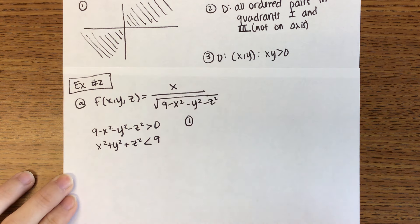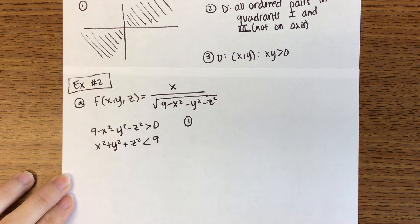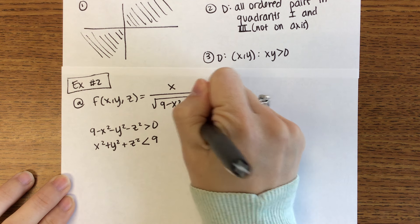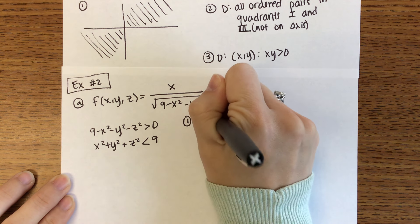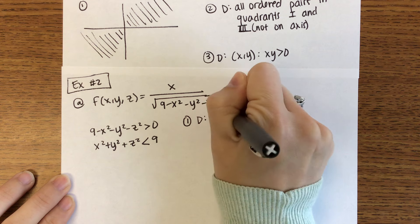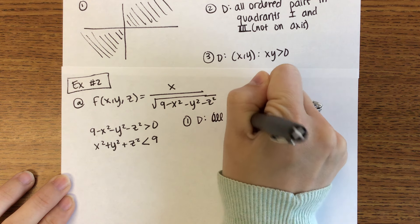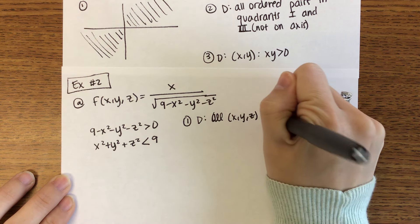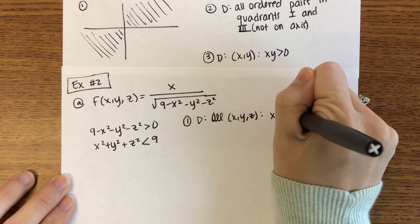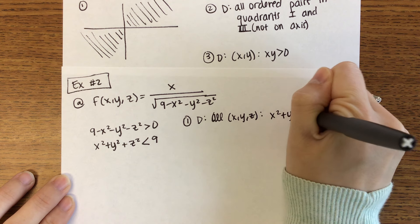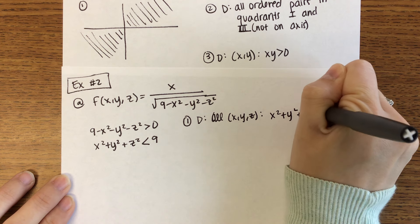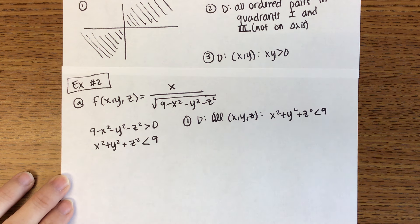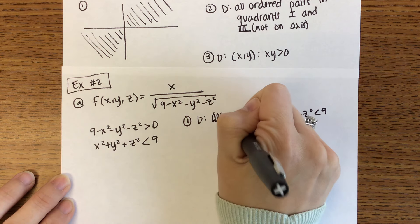We know that 9 minus x squared minus y squared minus z squared has to be greater than zero because we don't want to divide by zero. Moving the 9 over and dividing by negative 1 gives us x squared plus y squared plus z squared is less than 9. So the domain in math shorthand is: all (x, y, z) such that x squared plus y squared plus z squared is less than 9.